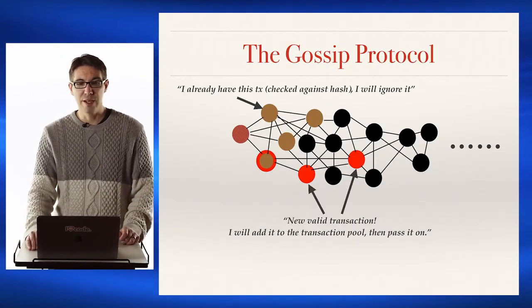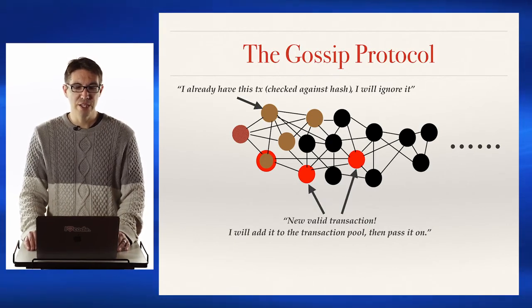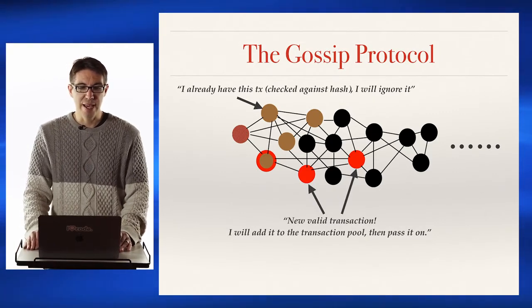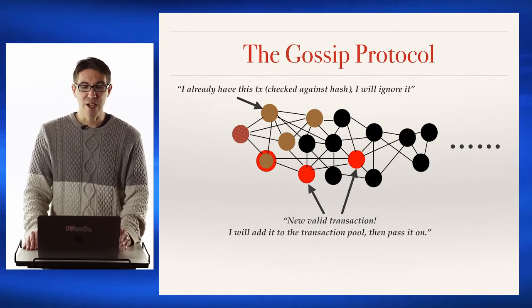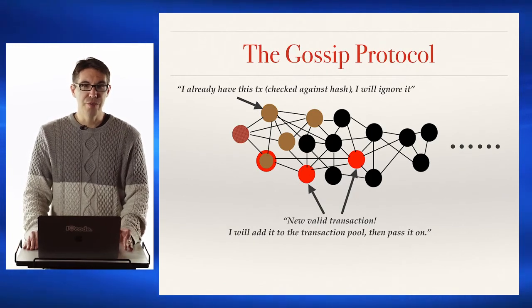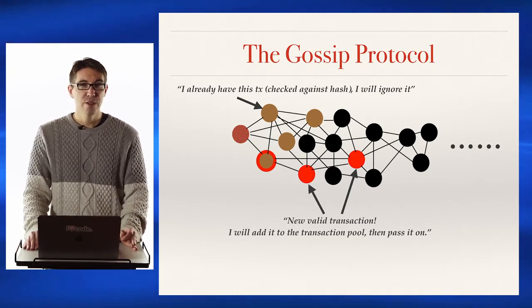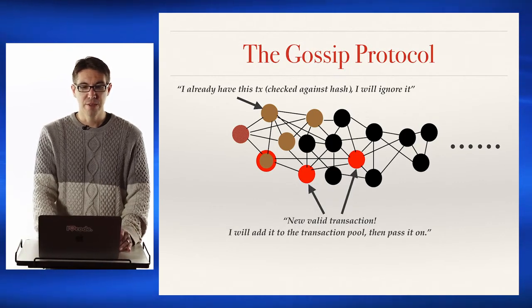I was the orange node that originally sent the transaction to the four gold nodes. That red-and-gold node has four peers including me, so it's not going to send the transaction back to me. One of the other gold nodes it points to was also my peer, so it will ignore that too. However, the two red nodes both see a new valid transaction they hadn't seen before, so they'll add it to their own transaction pool and pass it on to their peers — aside from the node that just sent it to them. This very simple protocol will eventually propagate the transaction to the entire Bitcoin network.